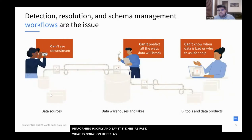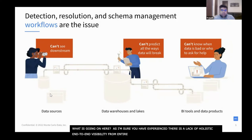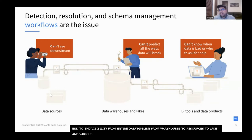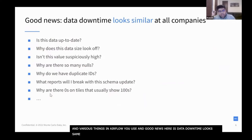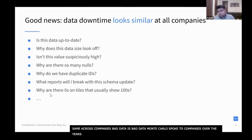As I'm sure you've experienced, there's a real lack of holistic or end-to-end visibility for your entire data pipeline — from your data sources to the warehouse and lake, to the various orchestrators like Airflow you use. The good news is data downtime looks the same across companies. Bad data is bad data. At Monte Carlo, we've spoken to hundreds of data companies over the years across various industries and sizes, and by and large, bad data looks the same to all of them.